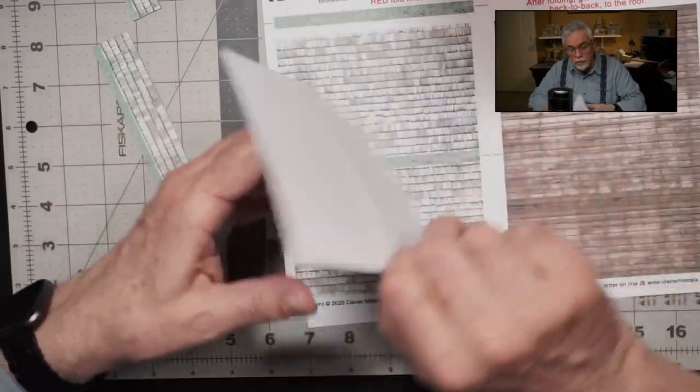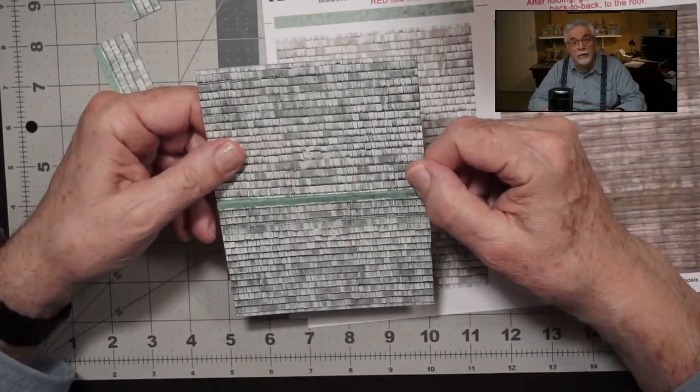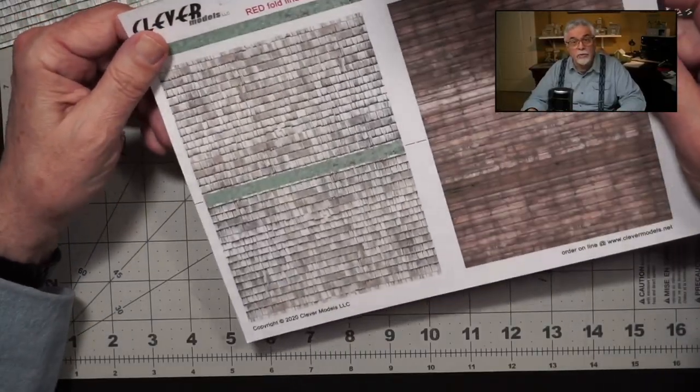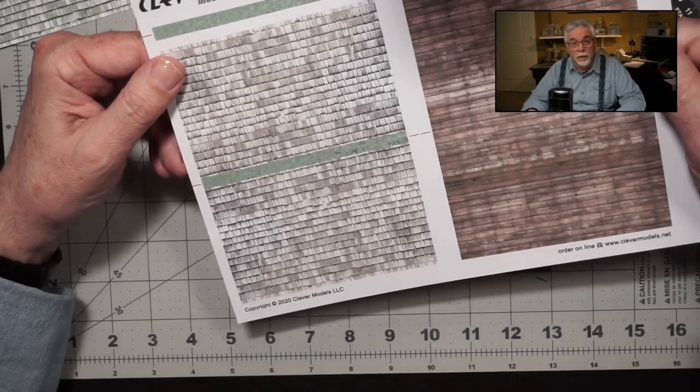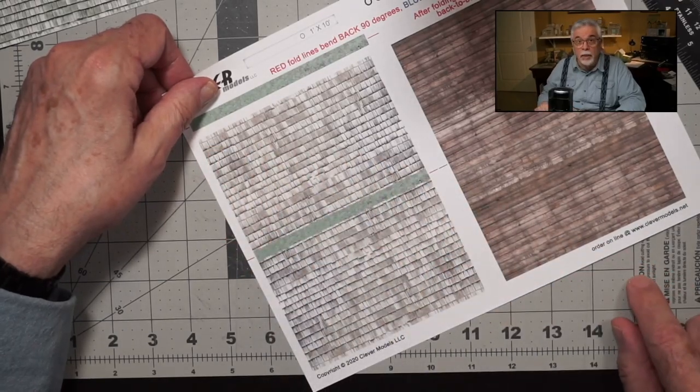The first thing you want to do is make two additional copies of page 7. The reason we do this is we're going to lap the shingles on each side of the roof. Score the back of the base layer, then cut it out. The next step is to take the two copies of page 7 we made and cut out the roof outlines on each page.